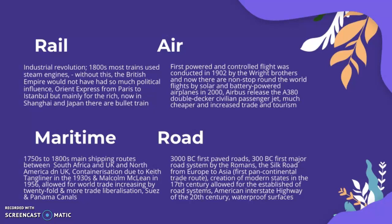For maritime transport: from the 1750s to 1800s, the main shipping routes were between South Africa and the UK, and North America and the UK. Containerisation — due to Keith Tantlinger in the 1930s and Malcolm McLean in 1956 — allowed world trade to increase 20-fold. There has also been more trade liberalisation and the establishment of the Suez and Panama Canals, which are very important for global sea trade routes.